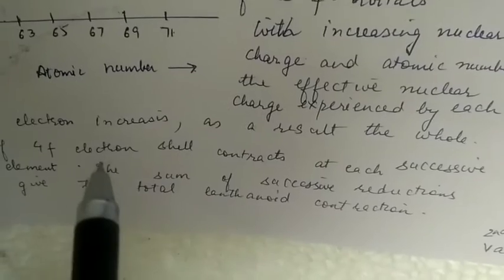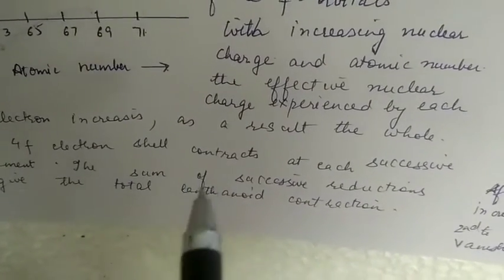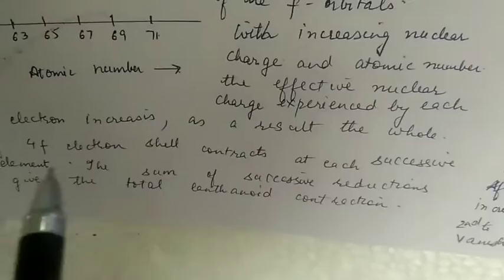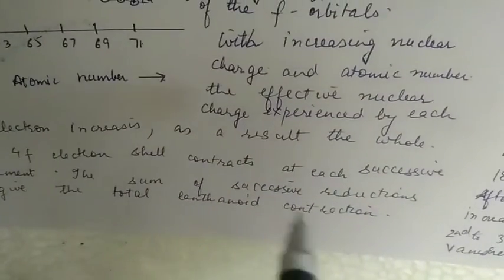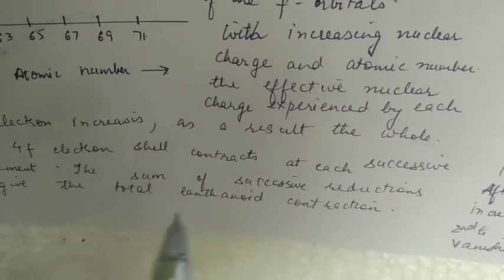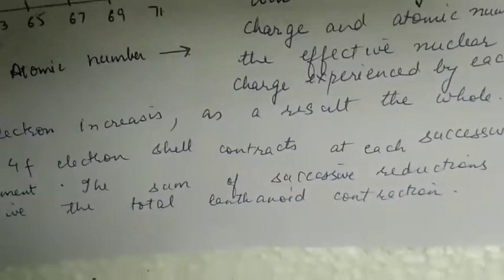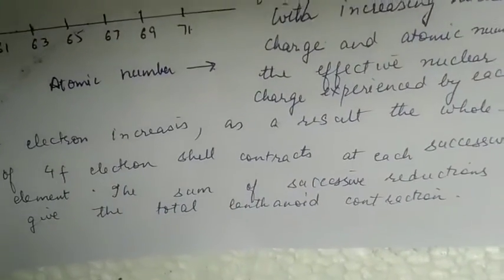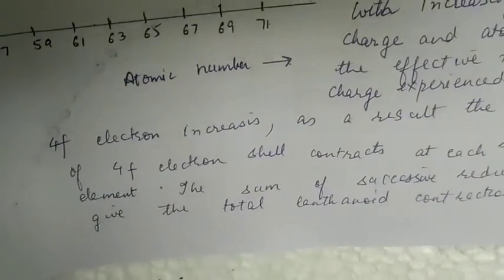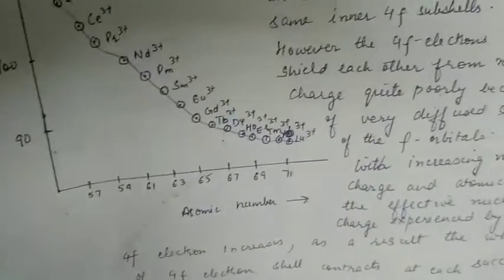So the 4f electron shell contracts as electrons enter. And if we look at all the contractions across the lanthanoids, there is this phenomenon which is called lanthanoid contraction.